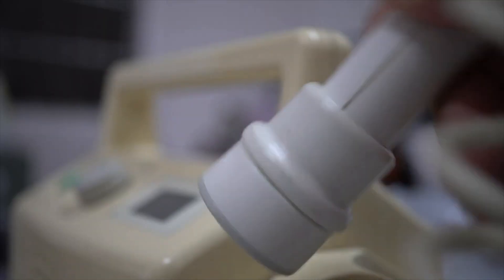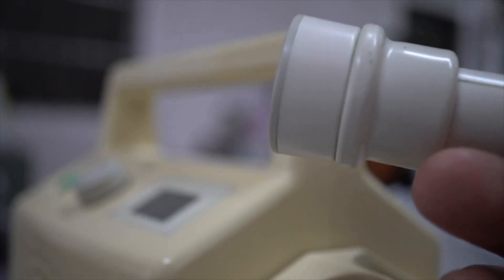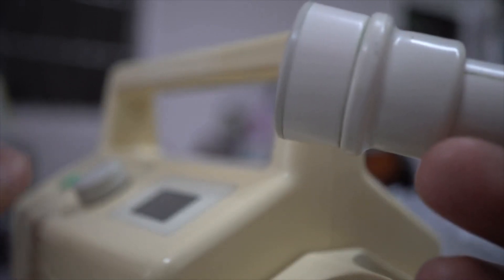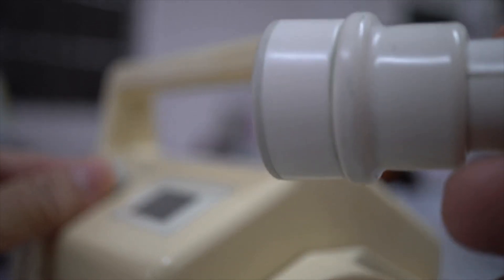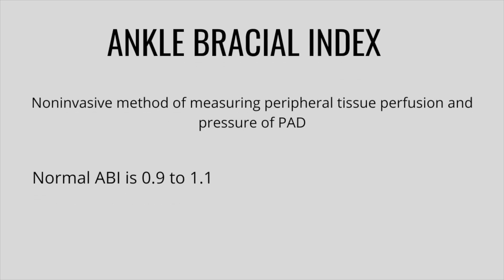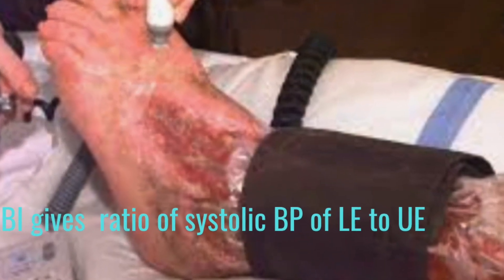In the nursing home setting, I order a Doppler ultrasound so someone can come in and assess the blood flow. Along with the Doppler ultrasound, I always add an ABI — an ankle-brachial index. When the ABI numbers are on the lower side, that is a huge significance of potentially how the wound is going to heal and how long it will take.